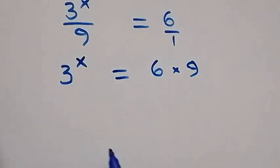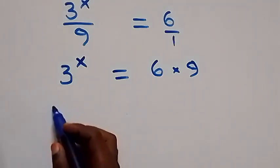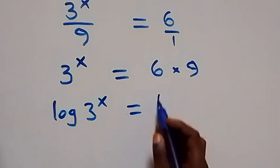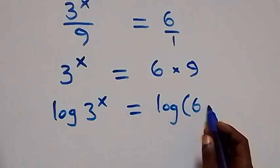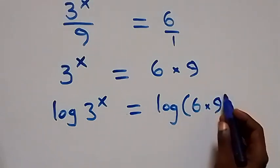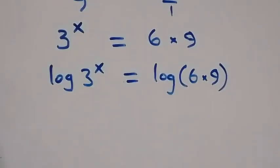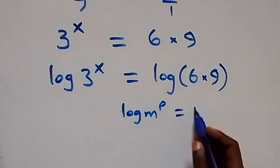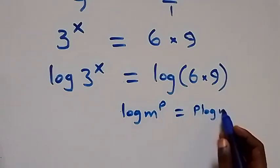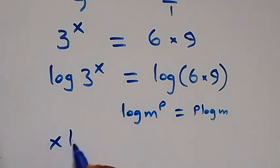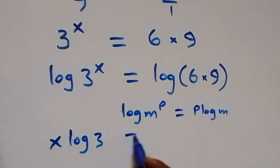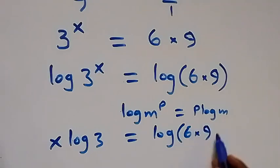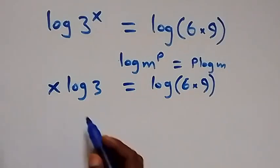From here we can take the log on both sides directly. We have log of 3 raised to power x equals log of (6 times 9). On the left-hand side, this follows from the power rule: log of m raised to power p is the same as p times log m. So x is the power, giving us x log 3 equals log(6 times 9).